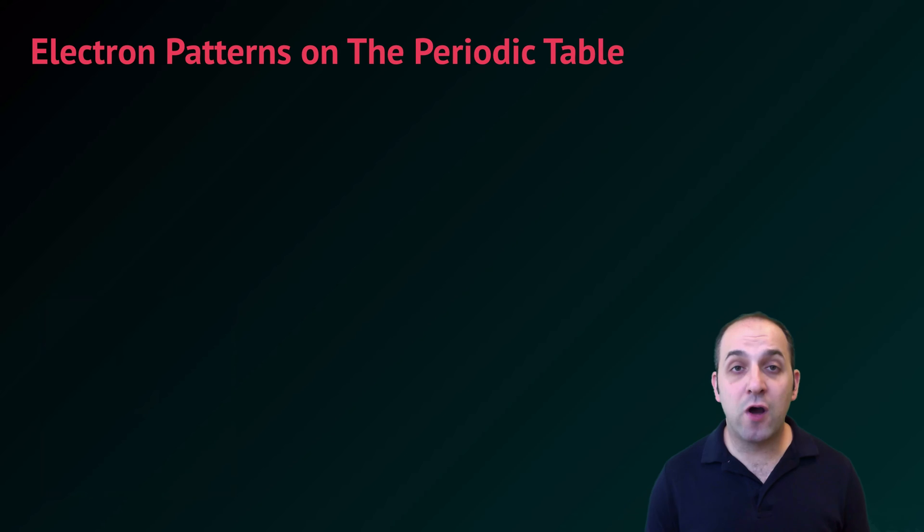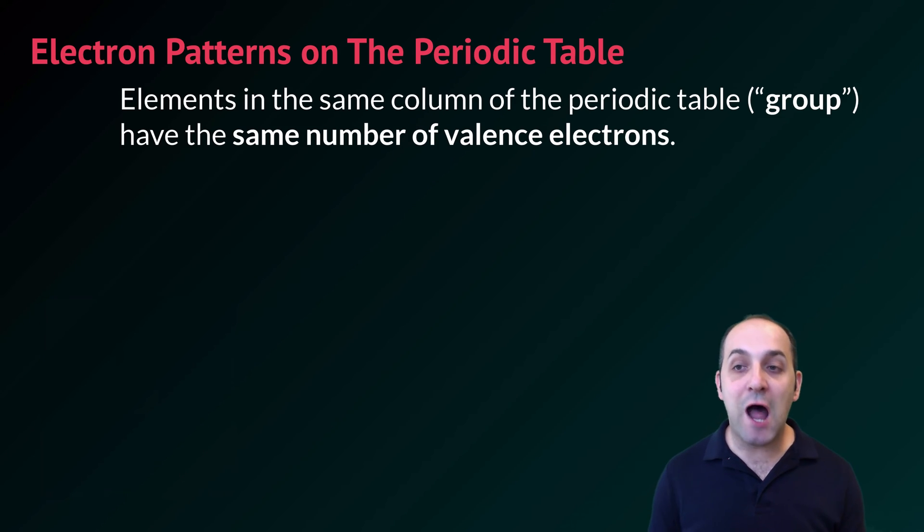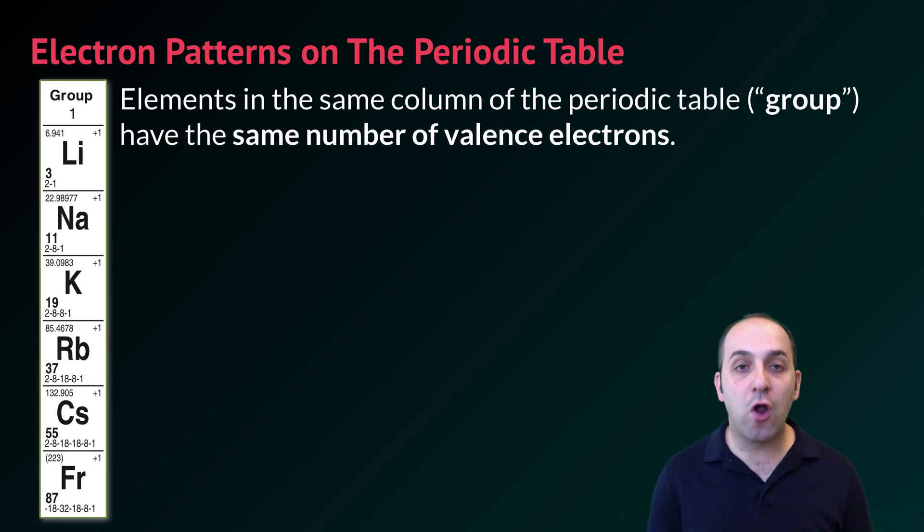You may start to notice that there are some patterns that we can see on the periodic table with regard to electrons, particularly with regard to the rows and the columns of the periodic table. So elements in the same column of the periodic table which we're going to call the same group have the same number of valence electrons. Here are all of the elements from group one and you can see that each of them have one valence electron.